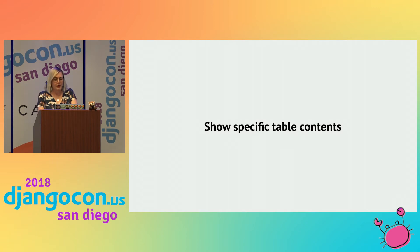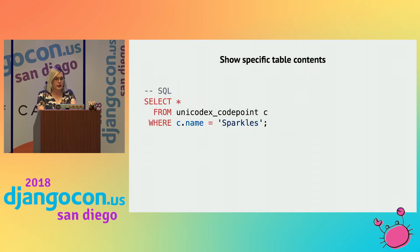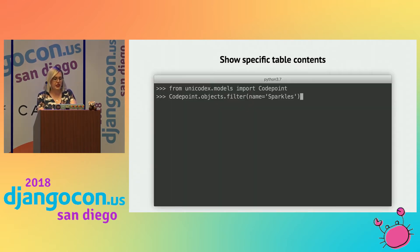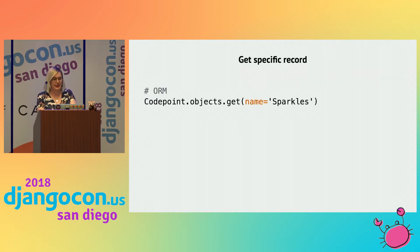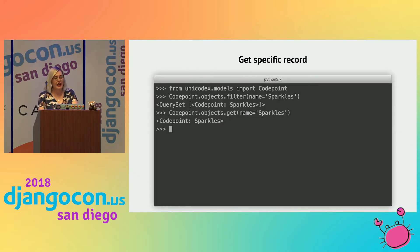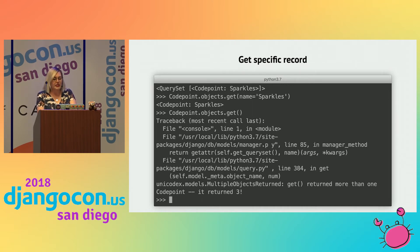Now that we know how to get all the things, how do we just get some of them? How do we add a WHERE clause? The ORM makes it easy — we can add a filter. I can ask it to filter on just code points that are sparkles, and I get the sparkles. But this is still a set. I want a specific object, so I need to use get. Get will return one and one only, and if you try to get more than one thing, Python will explode at you with a MultipleObjectsReturned error. This one has hit me multiple times.